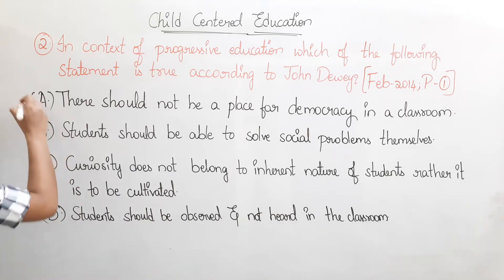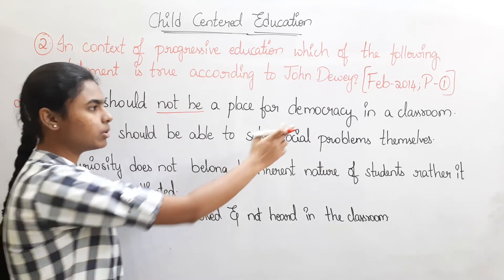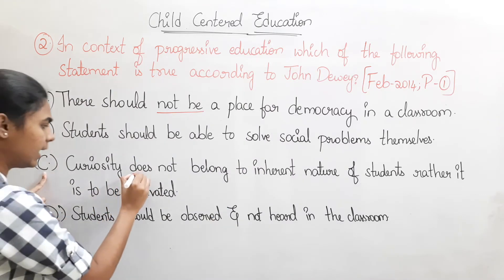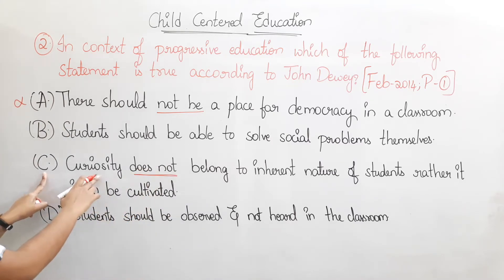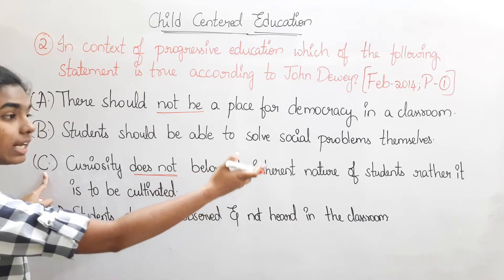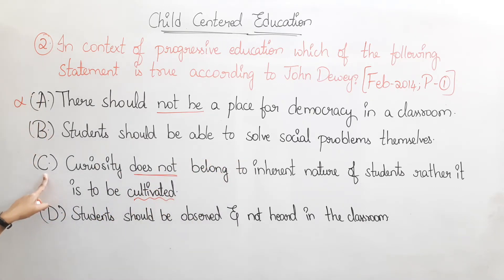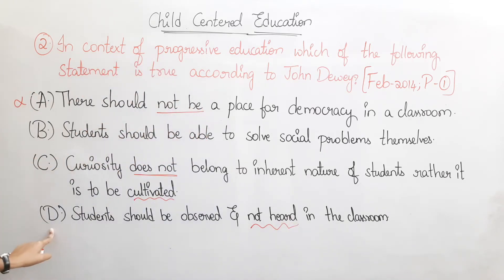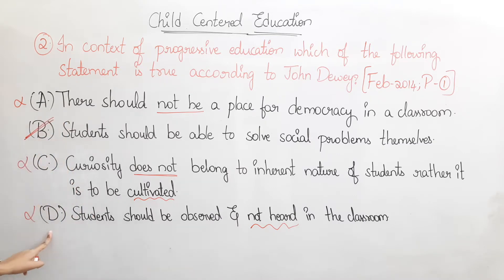Here, Option A says there should not be a place for democracy in a classroom — that is incorrect. Option C says curiosity does not belong to the inherent nature of students, rather it is to be cultivated — that is also incorrect for progressive education. The correct answer is Option B: students should be able to solve social problems themselves.